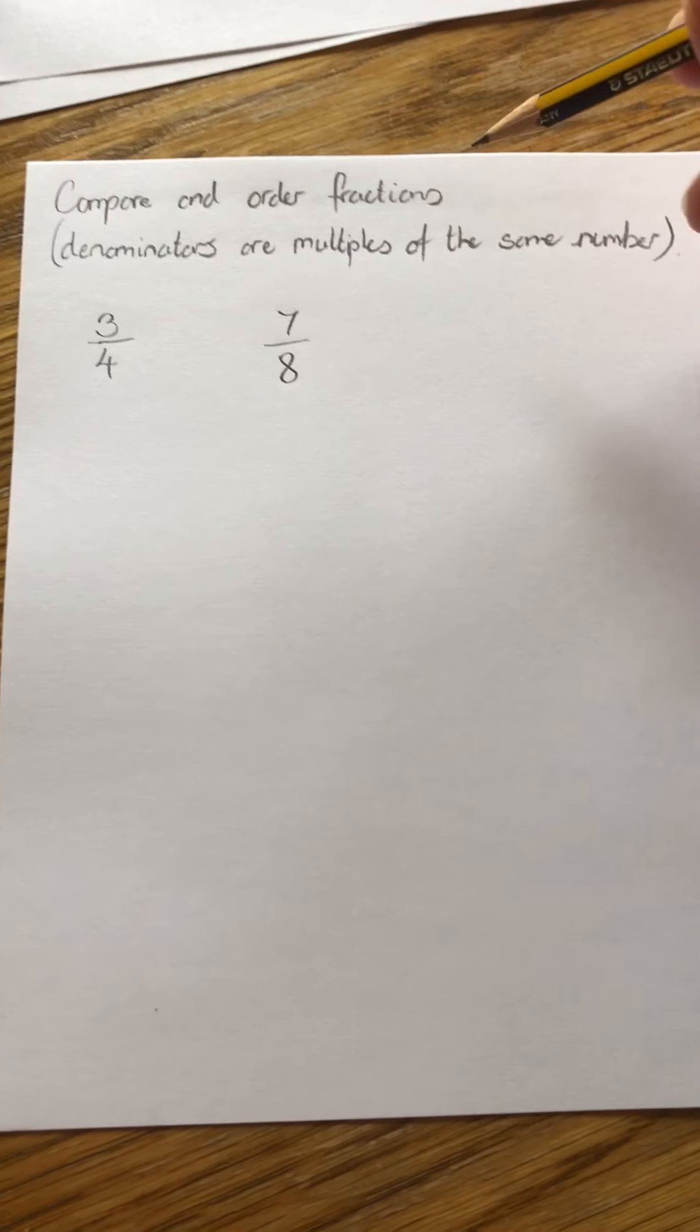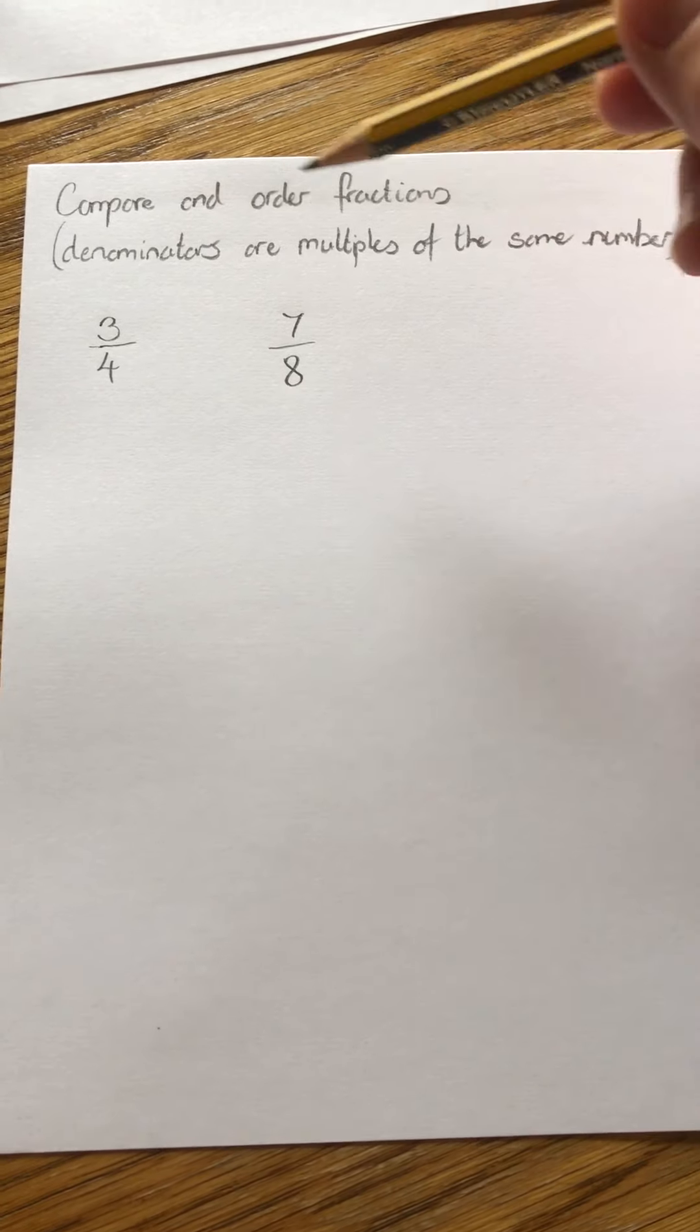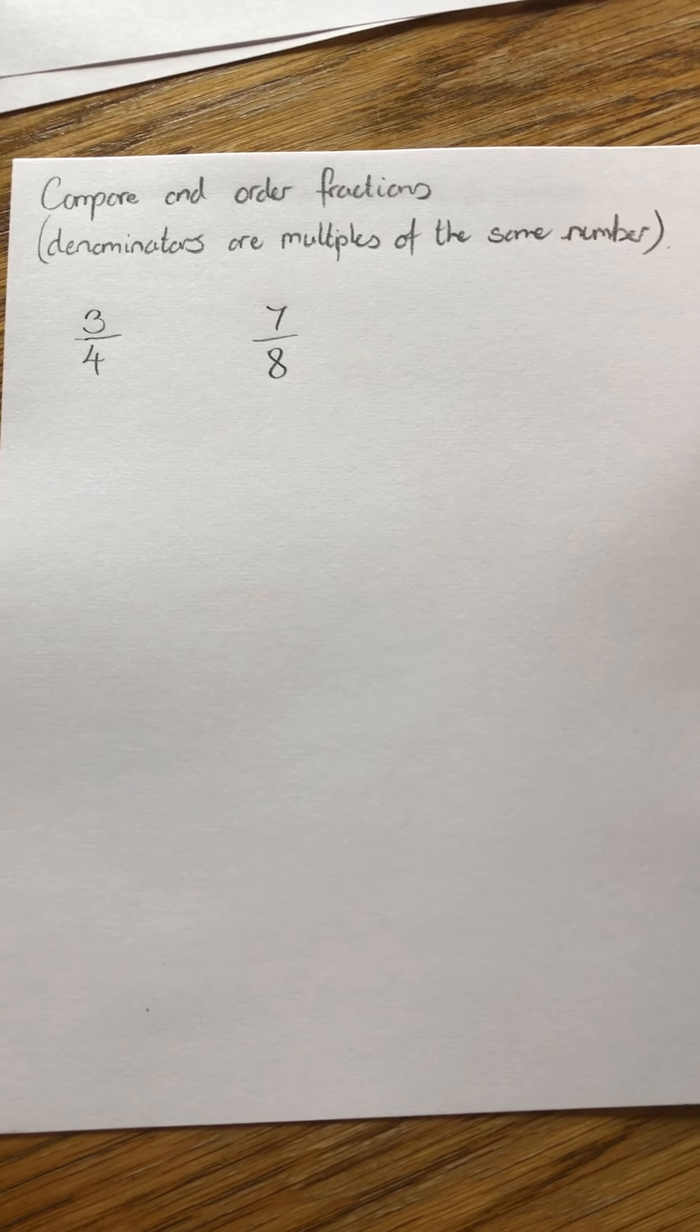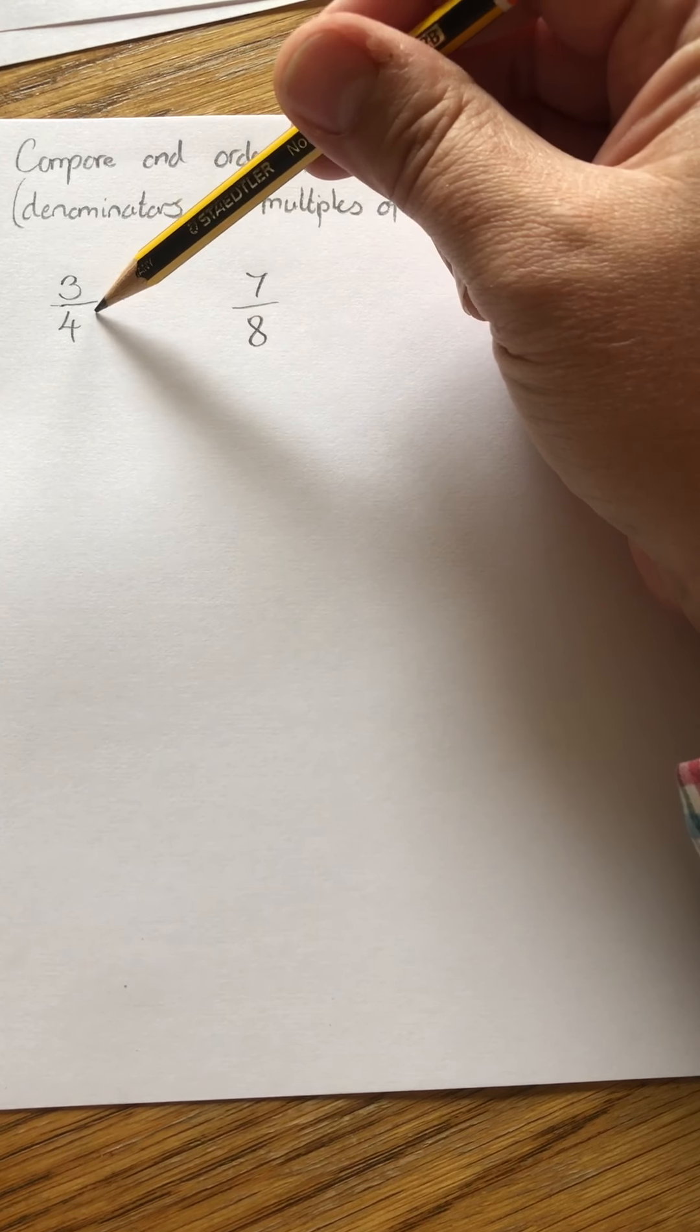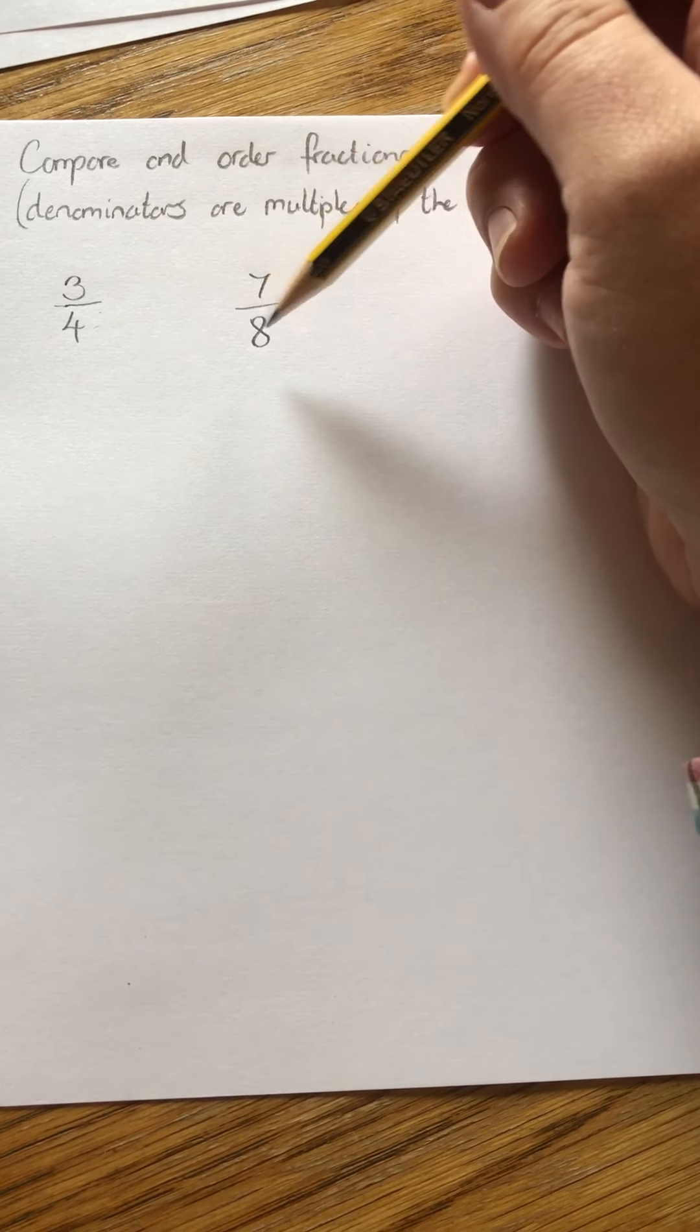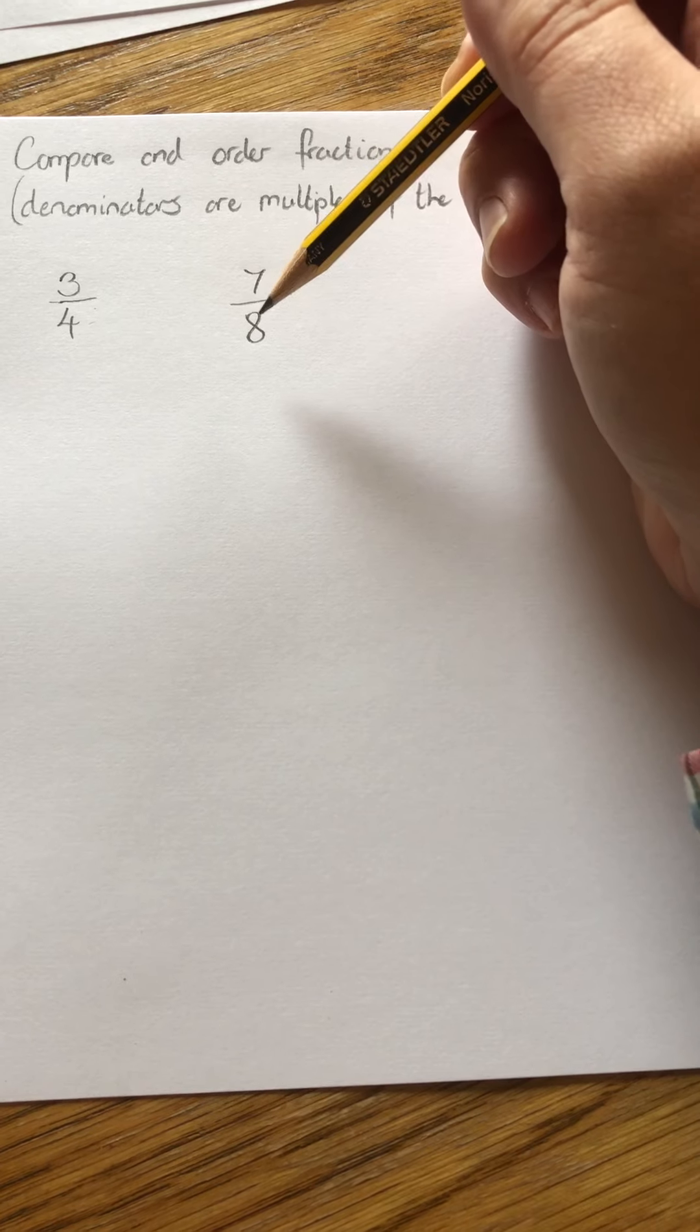So in this test we're looking at comparing and ordering fractions, but this time the denominators are multiples of the same number. So the denominators here are different numbers, but they're multiples, they're in the same times table. So it'll help us out a little bit.